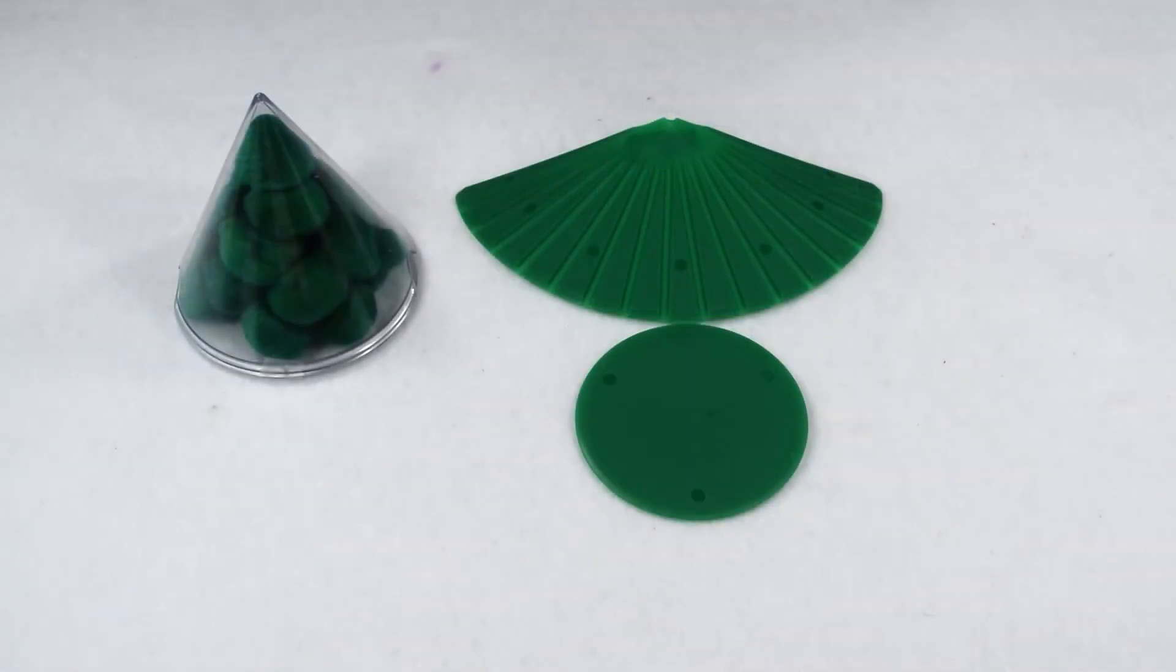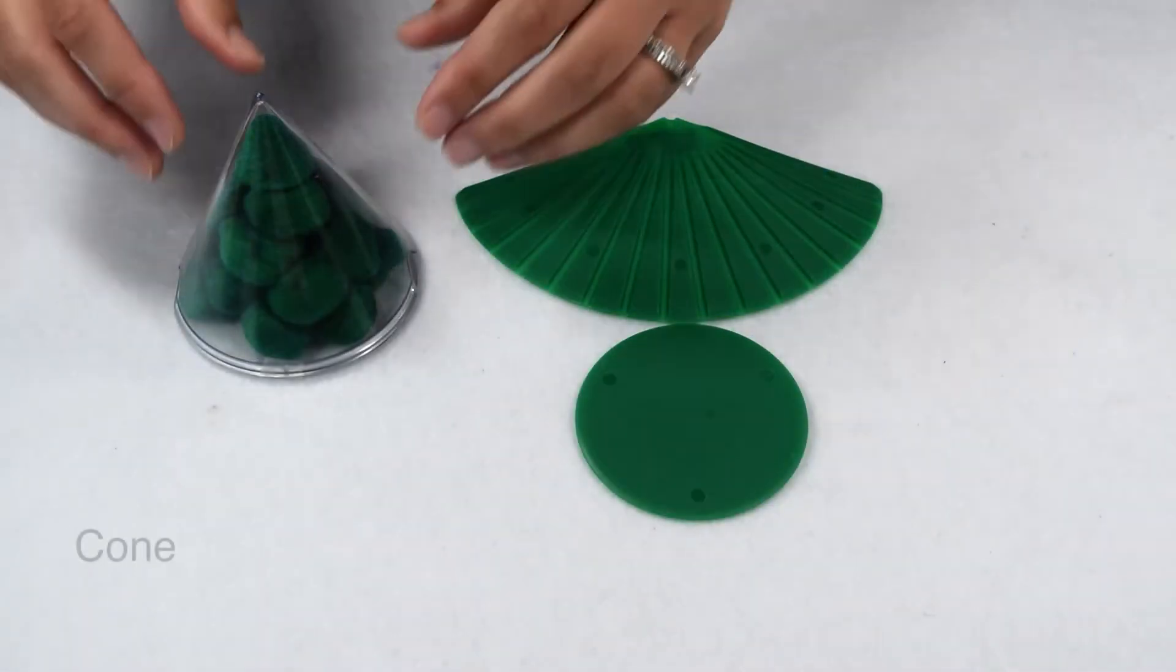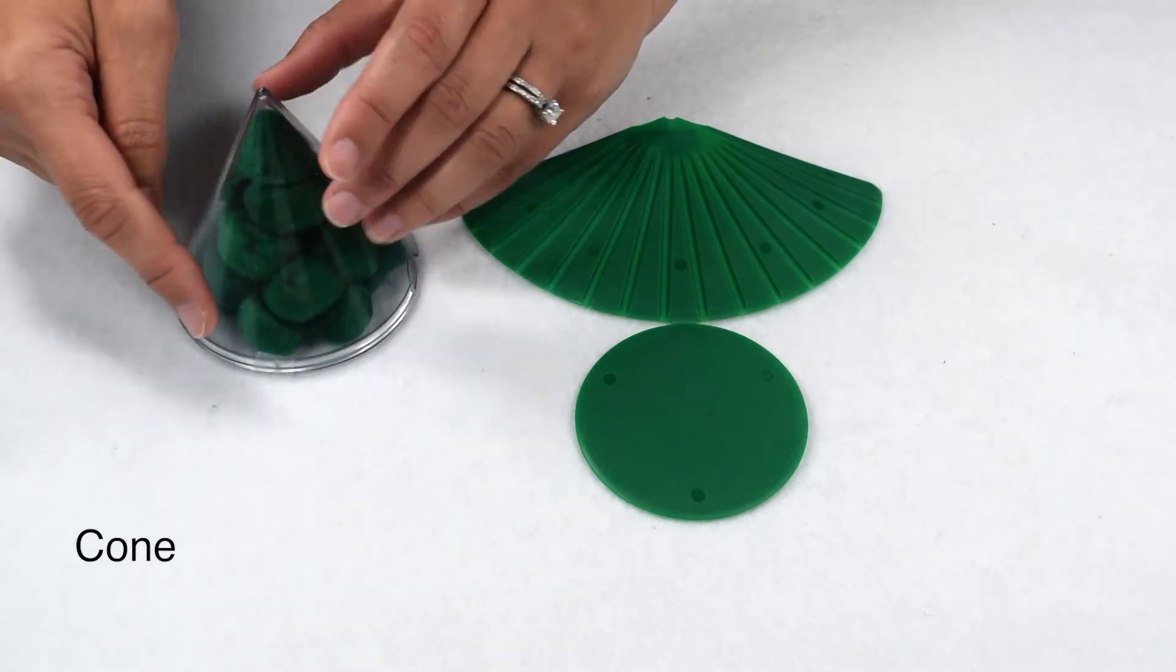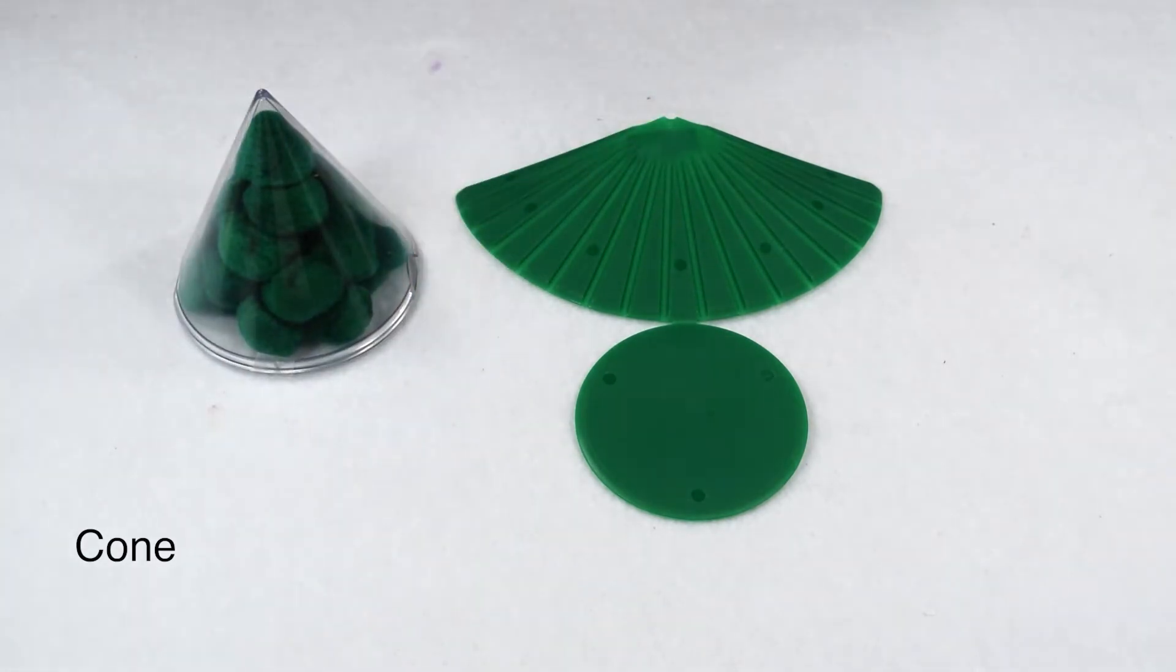Another three-dimensional figure that is not a polyhedron is a cone. A cone is a solid figure. It has one circular base and a curved lateral face that meets at an apex.